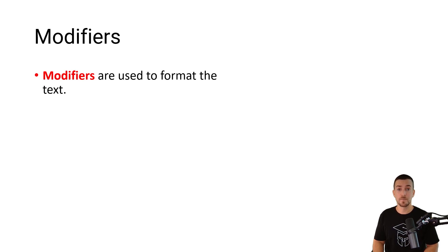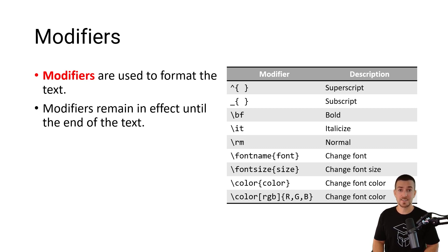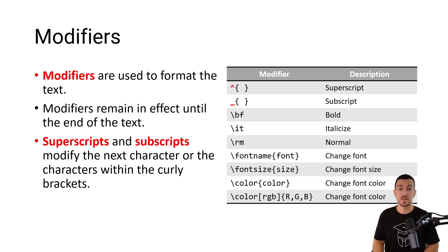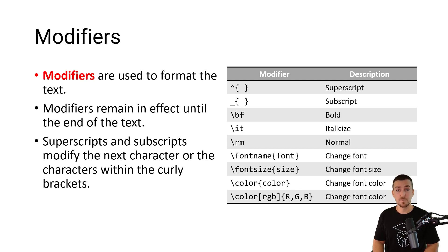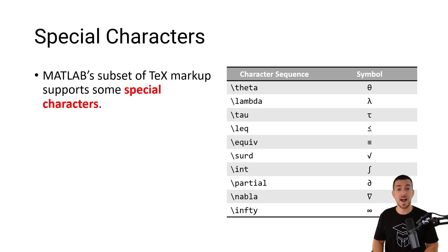Modifiers are used to format the text. In the table on the right-hand side, you can see the character sequences that you would enter to format the text. Modifiers remain in effect until the end of the text, with one exception: superscripts and subscripts only modify the next character or the characters within the curly brackets. Most of the modifiers begin with a backslash. As an example, if you wanted to make text bold, you would precede the text with the characters backslash b f. MATLAB's subset of TeX markup supports some special characters, highlighted in the table on the right-hand side.